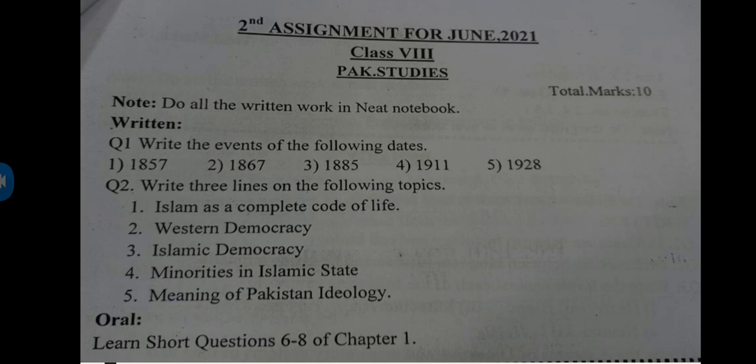There is also oral homework: learn short questions number six, seven, and eight of chapter number one. There are a total of 10 marks for this task. You will do all five written topics in your neat notebooks, writing only three lines each. First give the heading 'June Task,' then from the next page start the task.